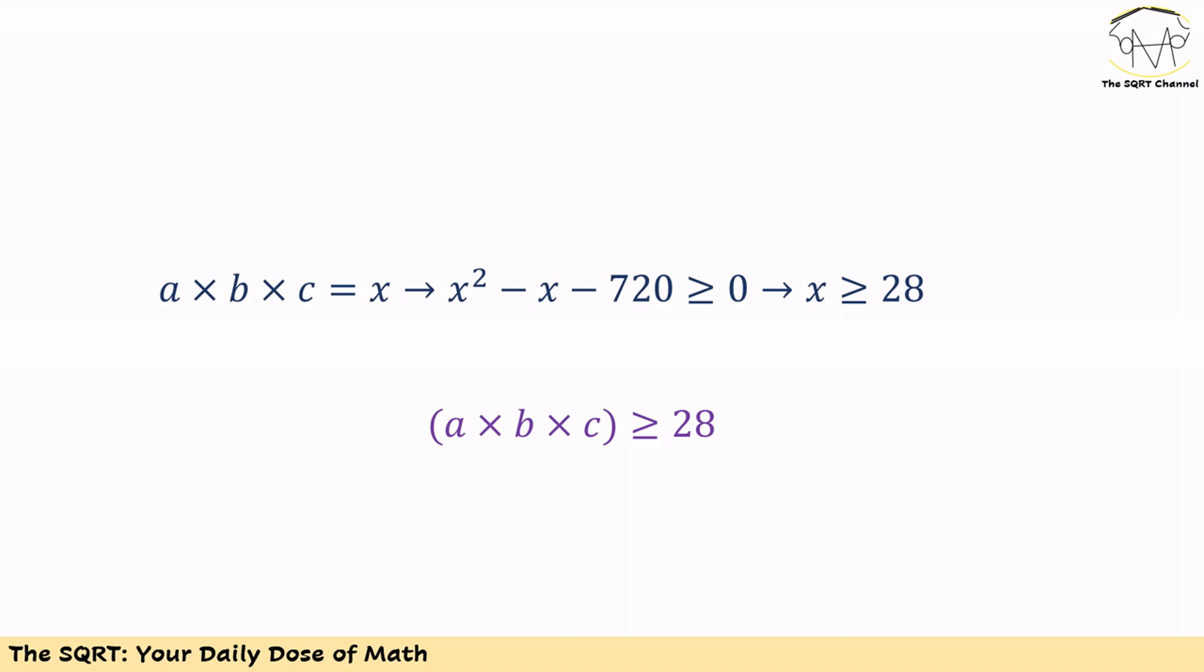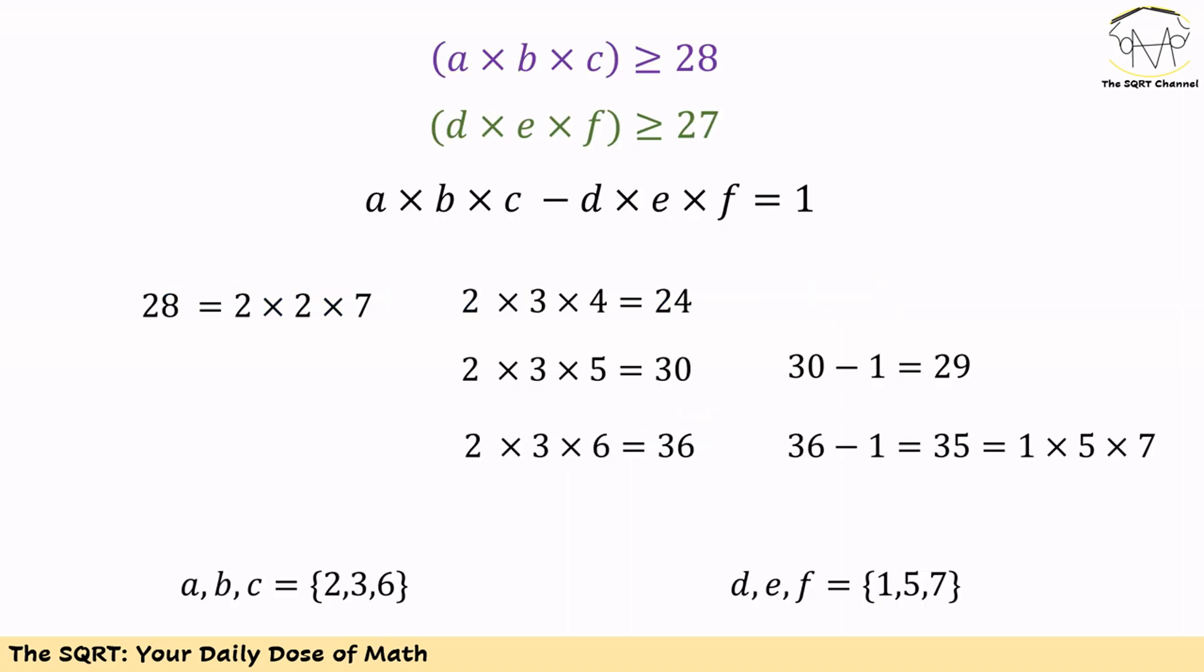What does it mean? It means the product of A, B, and C should be greater than or equal to 28. Obviously here the product of D, E, and F is going to be greater than or equal to 27. Now let's stop here and add some more reasoning.